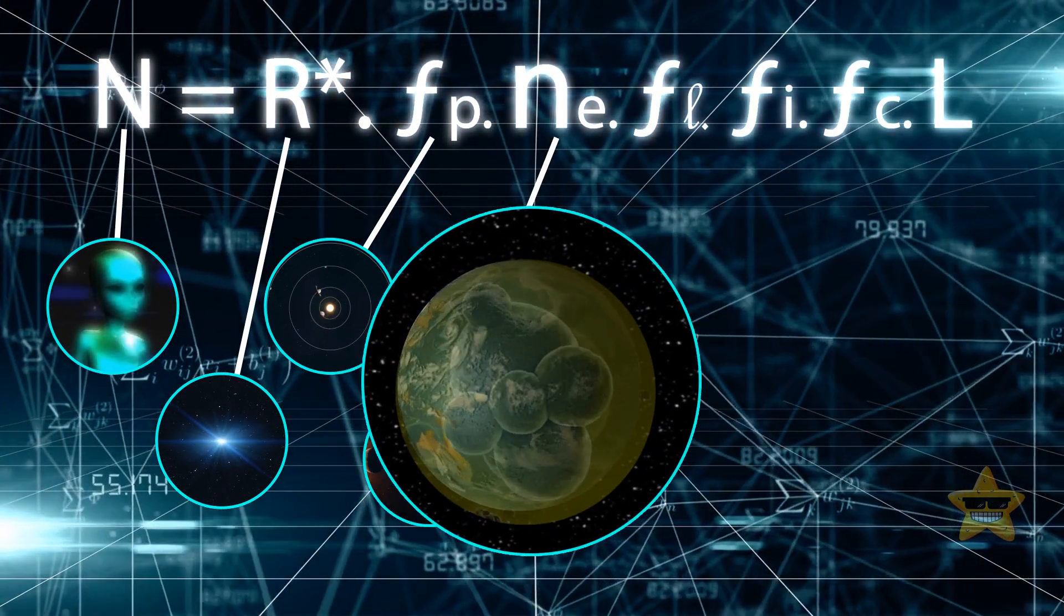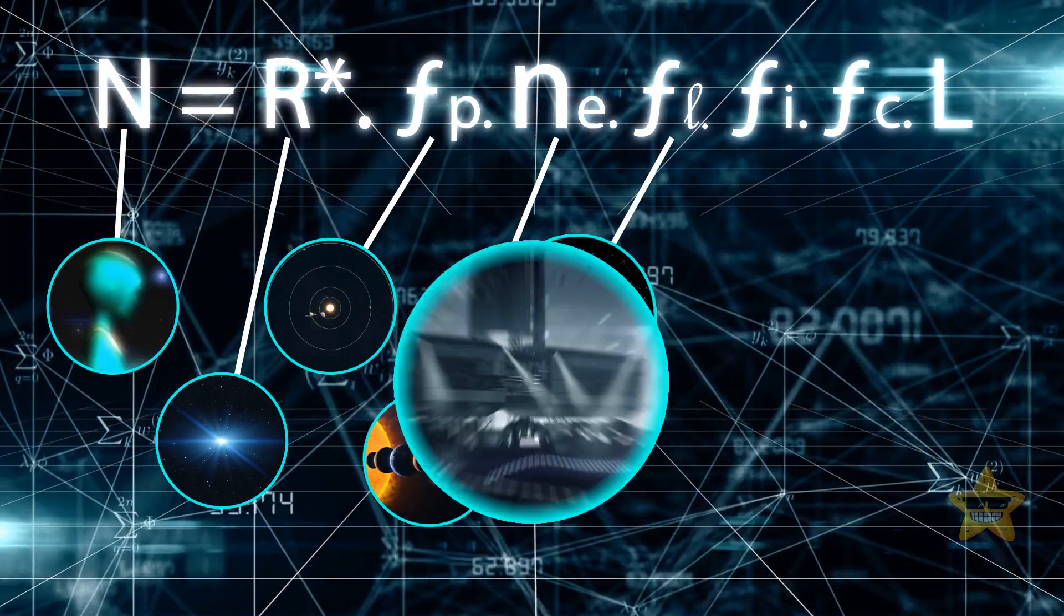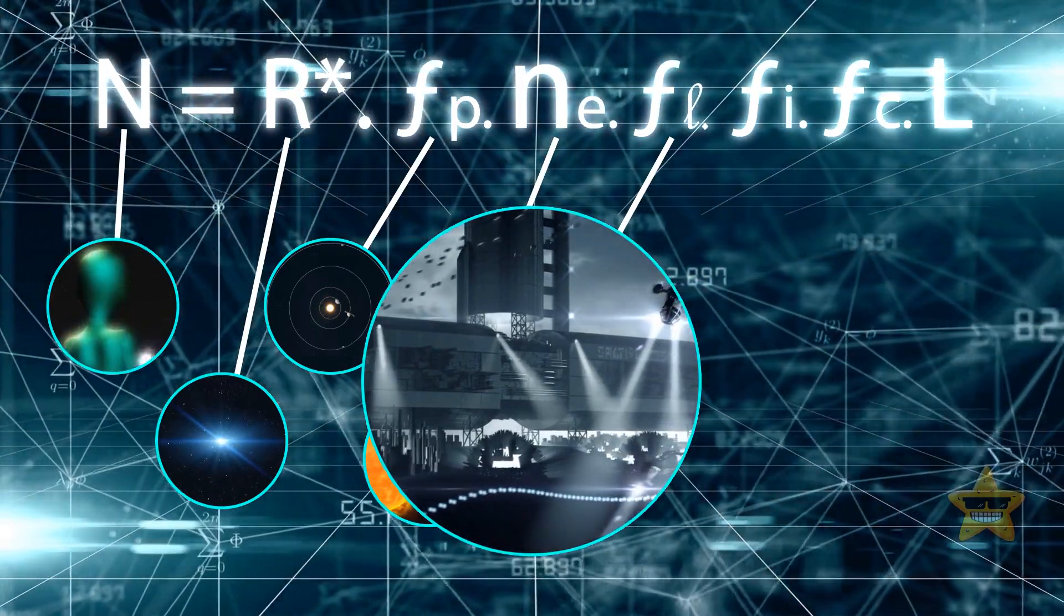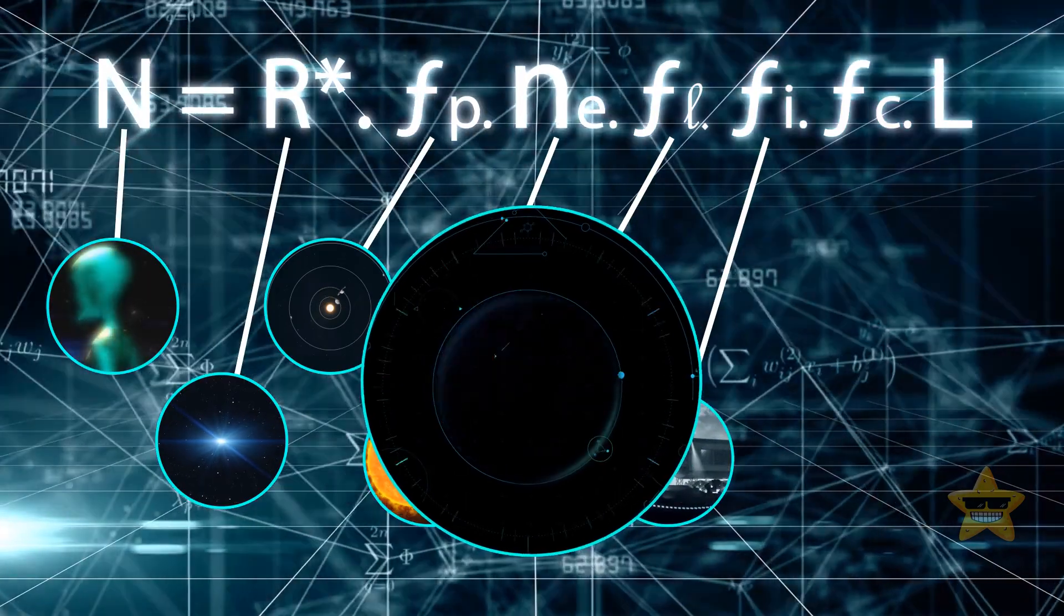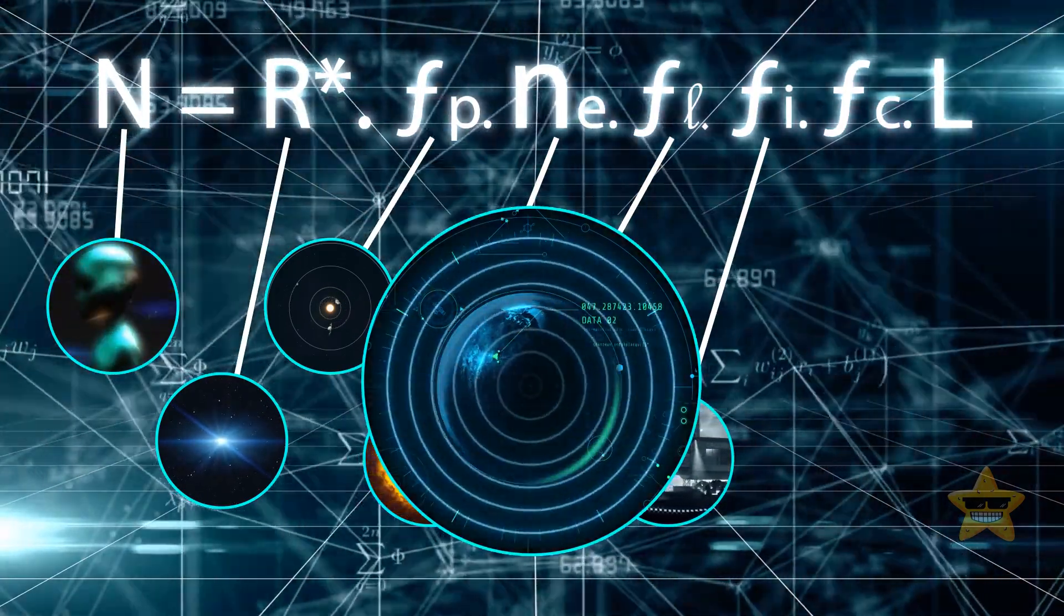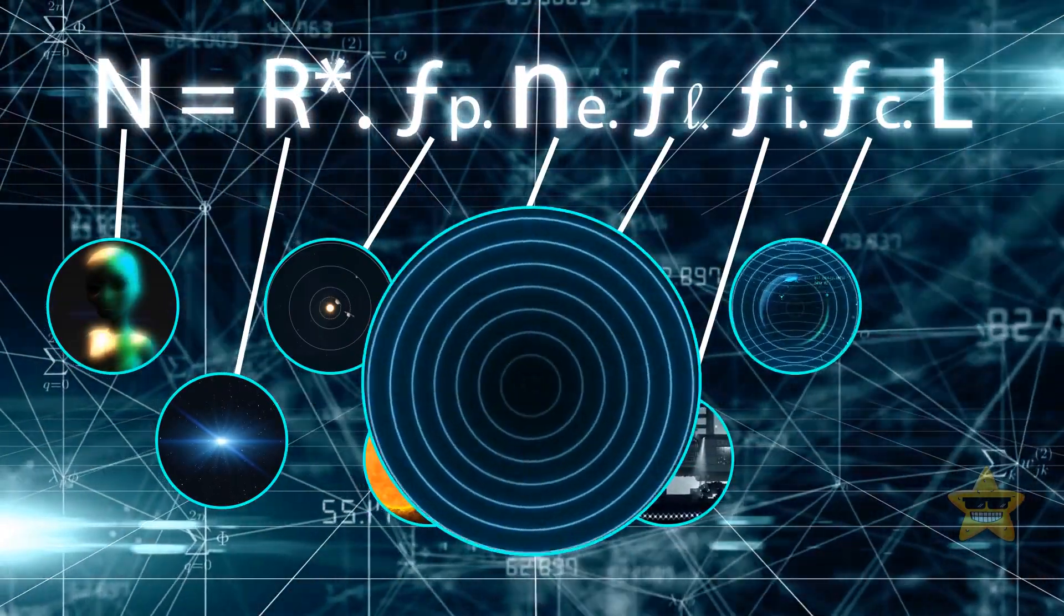F sub l is the fraction of those planets where life might actually start. F sub i is the fraction of planets with life that could become smart civilizations. F sub c is the fraction of smart civilizations that send signals into space. And L is how long those civilizations keep sending signals.